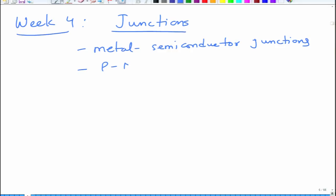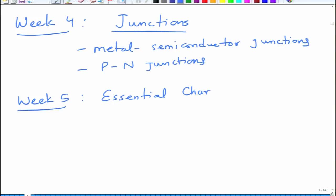Then in week five, we will understand the essential characteristics of photovoltaic devices — essential characteristics in terms of electrical parameters, what kind of circuits can depict a solar cell, what kind of resistances are there, and what quantifiable parameters define solar photovoltaics.